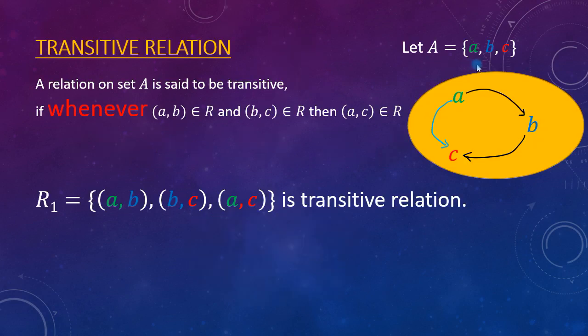A set A having elements a, b, and c. A relation on set A is said to be transitive if whenever (a,b) ∈ R and (b,c) ∈ R, then (a,c) ∈ R. With the help of an arrow diagram, whenever a is related to b and b is related to c, then a must be related to c for a relation to be transitive.